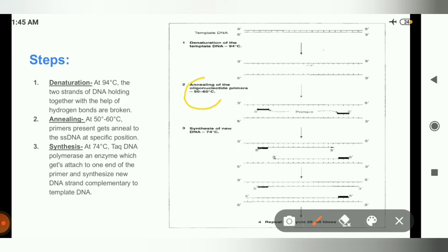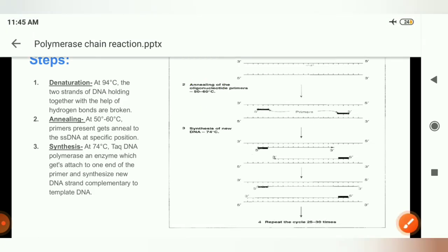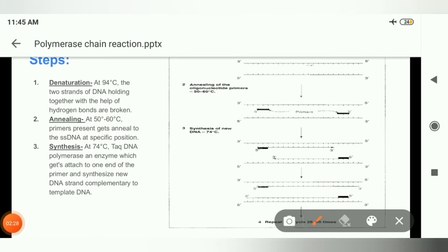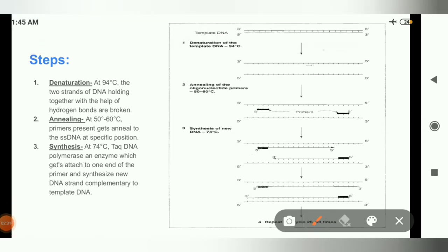After denaturation of the double-stranded DNA, the second step is annealing. Annealing takes place at 50 to 60 degrees Celsius. In the annealing step, primers are used. Primers are short oligonucleotide sequences which are complementary to a specific DNA sequence. After denaturation, we present primers to the template DNA and these primers get annealed at a specific position on the template DNA.